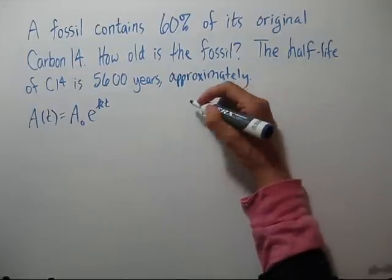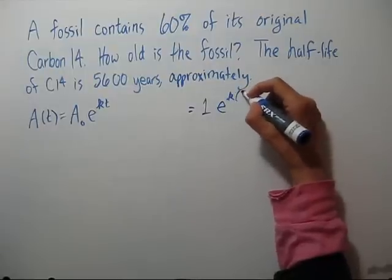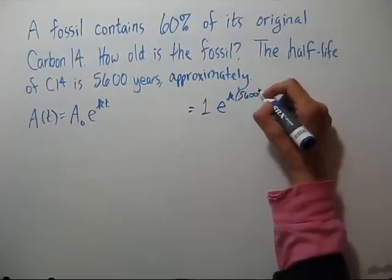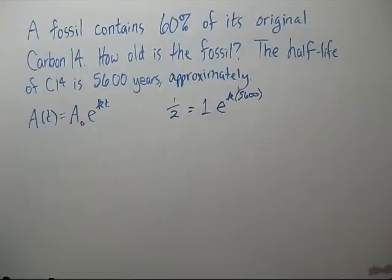One gram. So after 5,600 years, so t is 5,600. If we start with one gram, we'll end up with half a gram. So let's solve for k.